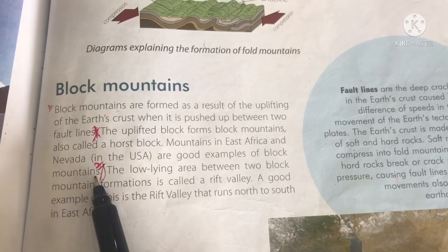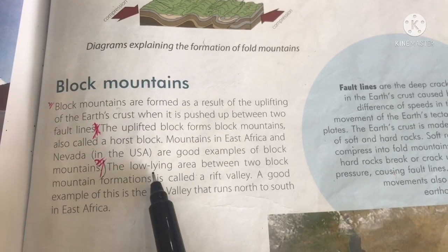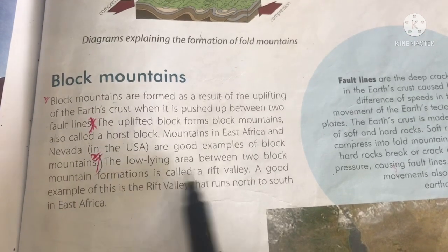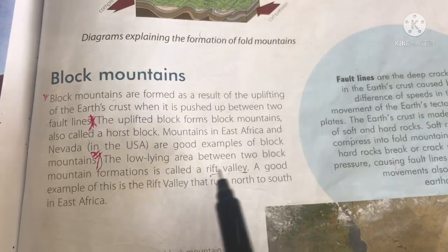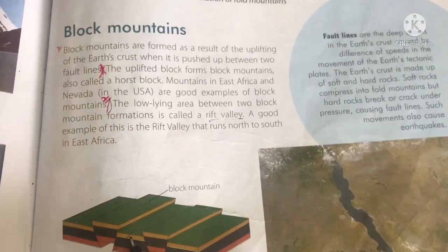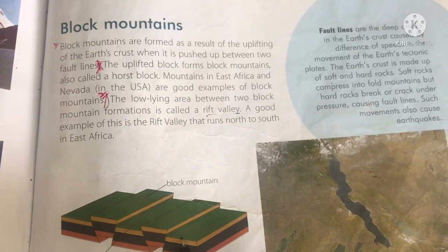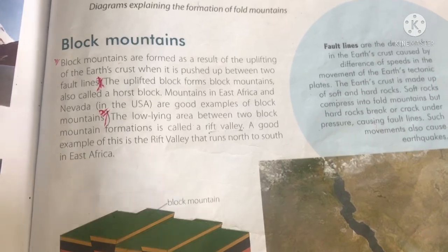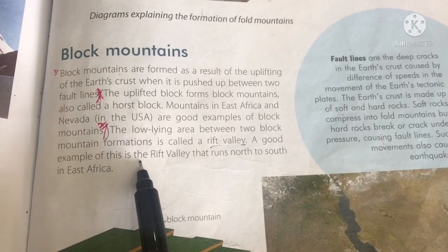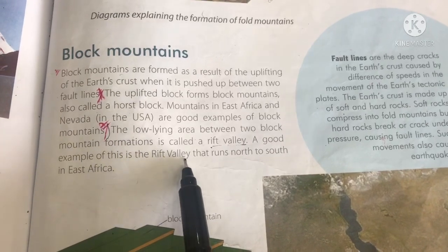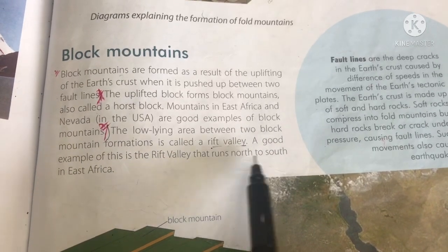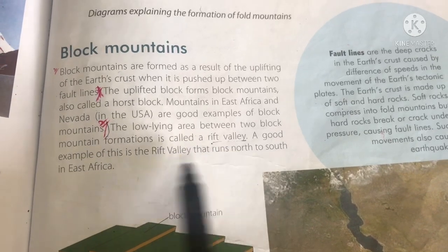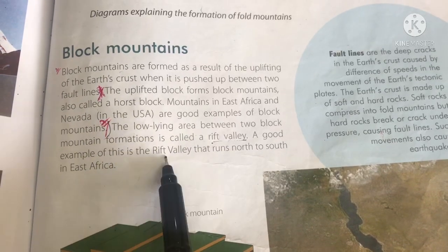The low-lying area between two block mountain formations is called a rift valley. A good example is the rift valley that runs north to south in East Africa.